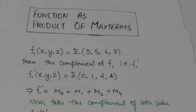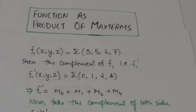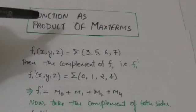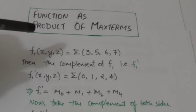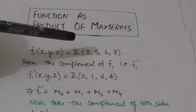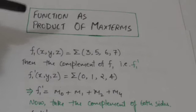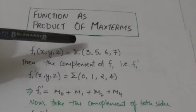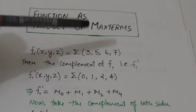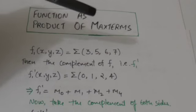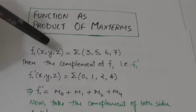Hello friends, welcome back to tutorial. In this tutorial we will learn how we can represent a boolean function as a product of max terms. Suppose there is a boolean function F1 of binary variables x, y and z, represented in the form of sum of min terms. Here it is written in shorthand — sigma denotes that the function is represented as sum of min terms. 3, 5, 6, 7 are the subscripts of the min terms.